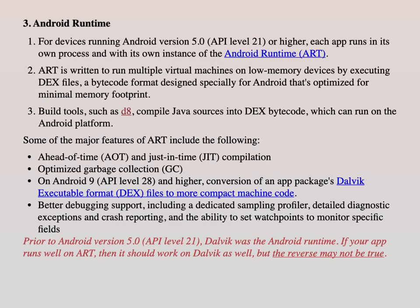The next layer is Android Runtime. For devices running Android version 5 (API level 21) or higher, each application runs in its own process with its own instance of the Android runtime. ART is written to run multiple virtual machines on low-memory devices by executing DEX files — a bytecode format designed specifically for Android. Similar to how a Java Virtual Machine uses .class files, Android uses a virtual machine with a bytecode format known as DEX.